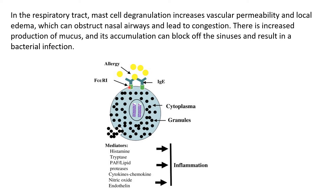This binding in turn undergoes certain steps leading to degranulation. During degranulation, mediators such as histamine, tryptase, proteases, cytokines, and endothelin are released in the respiratory tract, leading to inflammation.